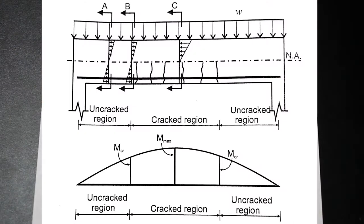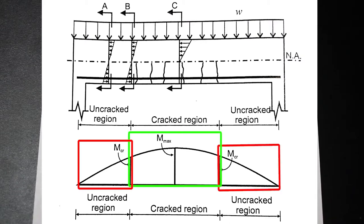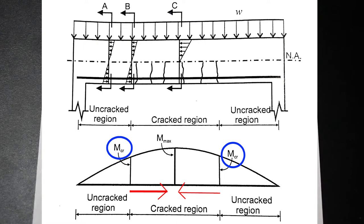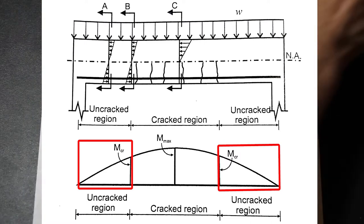On screen we have a simply supported beam subjected to a uniform load. There are different regions of moment — the moment in a uniformly distributed load case is parabolic, increasing to mid-span. On the right and left we have the cracking moment, Mcr. The cracking moment is where the beam will start to crack; past that moment it continues to crack until fully cracked. The region between those Mcr points is the cracked region, and anything outside is the uncracked region.